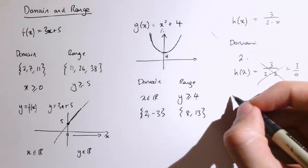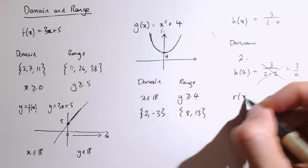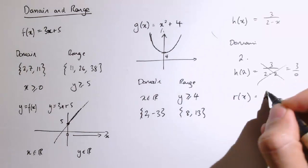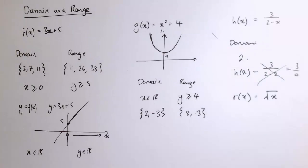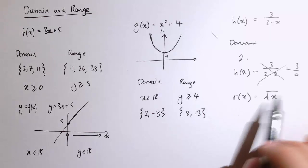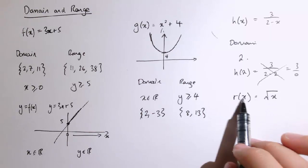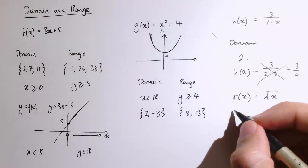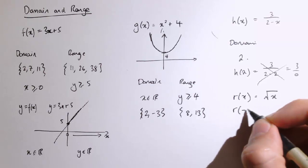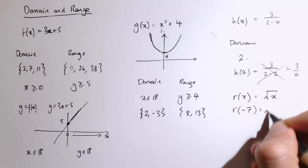Similarly, if you had something like a function r(x) equals the square root of x, if we want a real answer to this, a real output, we've got to make sure that x is a positive number. If I did r(-7), I would have to do the square root of -7.